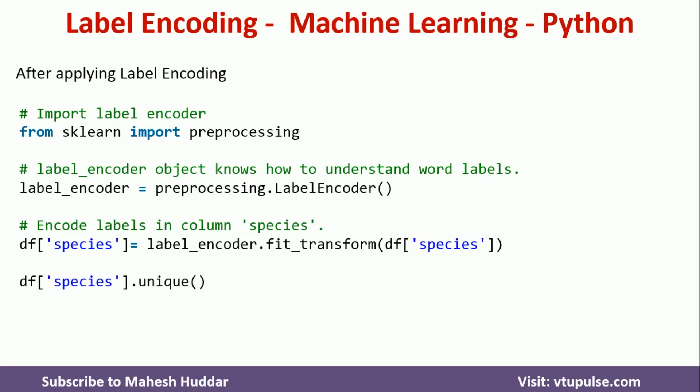Since we have three labels, we get 0, 1, 2 as the numeric values for that column. Printing the unique values now shows 0, 1, and 2 — the first label is replaced with 0, the second with 1, and the third with 2. This is a very simple process to convert labels into numeric values in Python using the sklearn library.